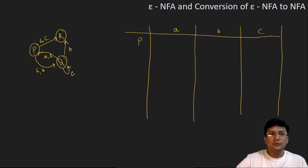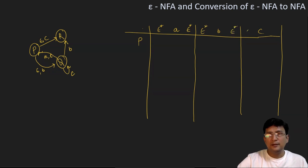We will first compute the transition of p with a. We know that we will have to compute epsilon star, then a, and then epsilon star — meaning epsilon closure. So epsilon closure, then b and epsilon closure, and epsilon closure with c, and then epsilon closure.